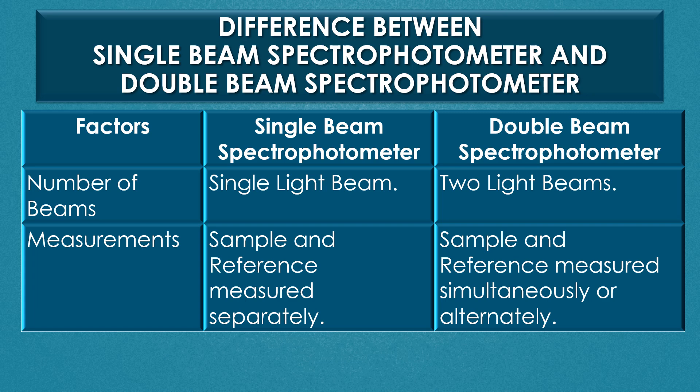First, number of beams: a single light beam is observed in a single beam spectrophotometer, and two light beams are observed in a double beam spectrophotometer. Regarding measurements, sample and reference are measured separately in a single beam spectrophotometer, and in a double beam spectrophotometer, sample and reference are measured simultaneously or alternately.